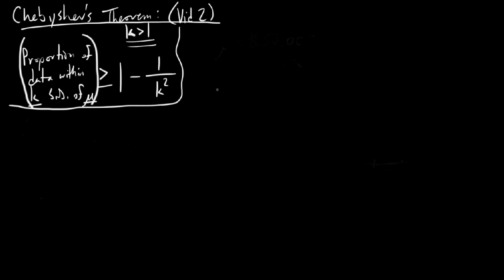In the last video we used Chebyshev's Theorem to find what proportion of data values fell within a given set of data values. In this one we're going to look at it a little differently. What if we were already given the proportion of data values that fell around the mean, and we wanted to find out what interval would necessarily satisfy that proportion? So in this instance, we're starting with a percentage of data values that surround our average.